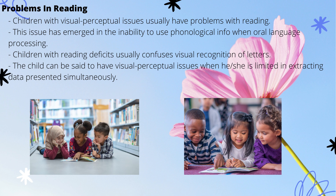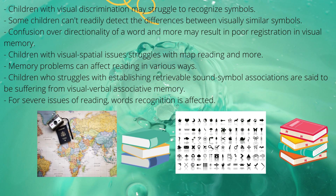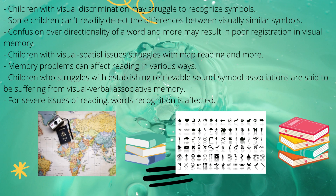Children can also be said to have visual perceptual problems when he or she is limited in extracting data presented simultaneously. Children with visual discrimination may struggle to recognize symbols and therefore may be very slow to master the alphabets and numbers. Some children cannot readily detect the differences between visually similar symbols, such as the confusion between letters A and O. Confusion over directionality of a word may result in poor registration in visual memory, which can also cause significant delays in sight vocabulary consolidation.